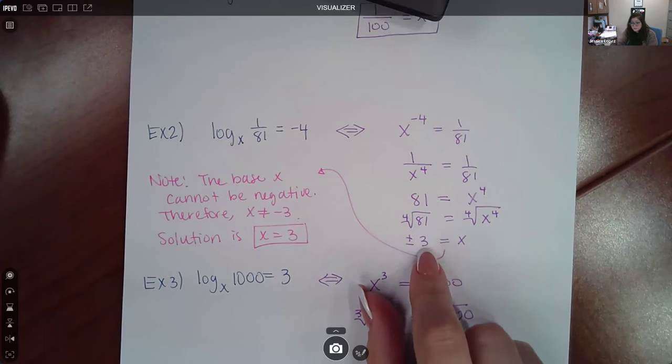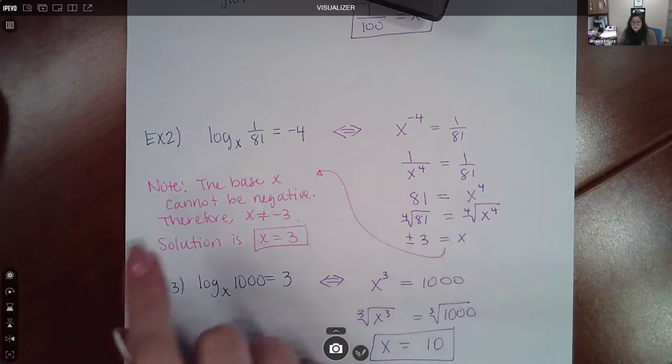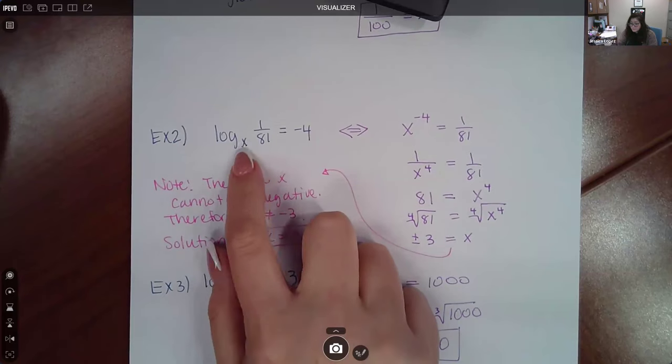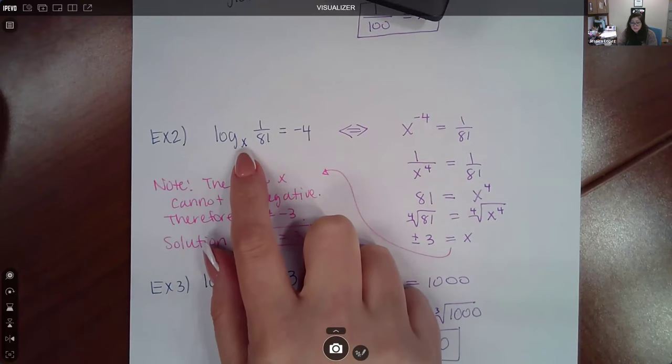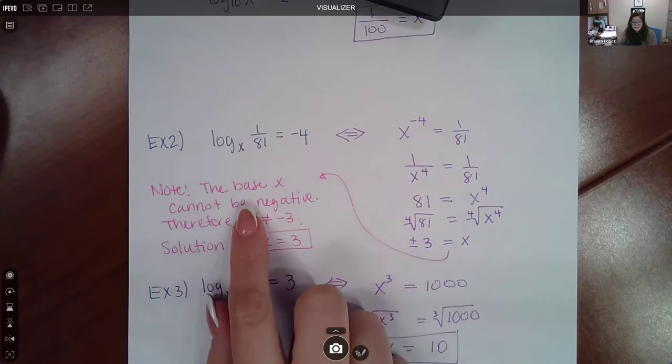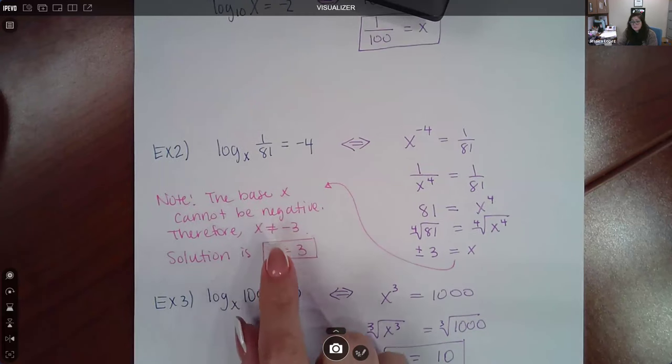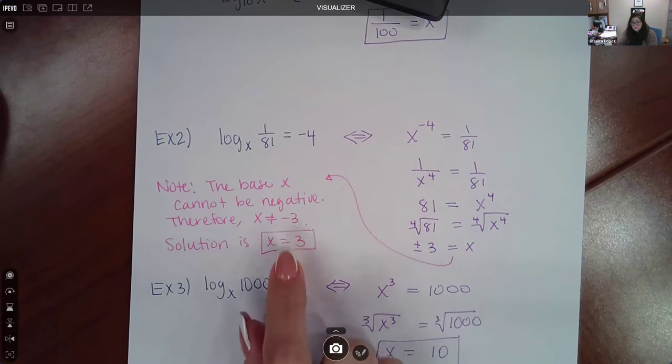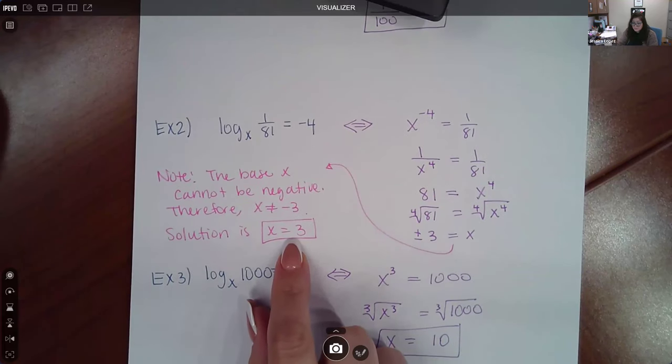And the fourth root of 81 is 3. So keep in mind that when you're talking about the X value, its location here is in the base, and the base cannot be negative, therefore X cannot equal that negative 3. So the only solution that we have here is just X equal to the positive 3.